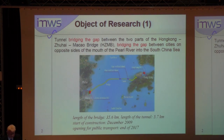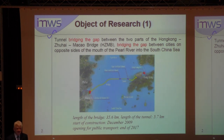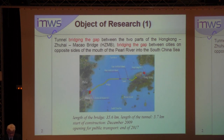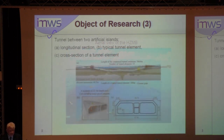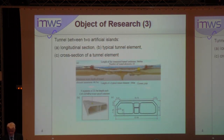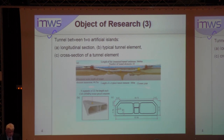This figure shows an aerial view of the Hong Kong-Zhuhai-Macao Bridge. The tunnel stretches between two artificial islands. The upper part of the figure shows a longitudinal cross-section. The maximum water depth of the tunnel element immersion is 44.5 meters, so the sea is relatively shallow at the mouth of the Pearl River. The length of a typical tunnel element is 180 meters, consisting of eight segments of 22.5 meters length.